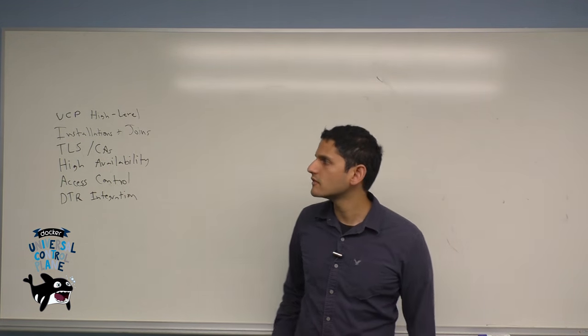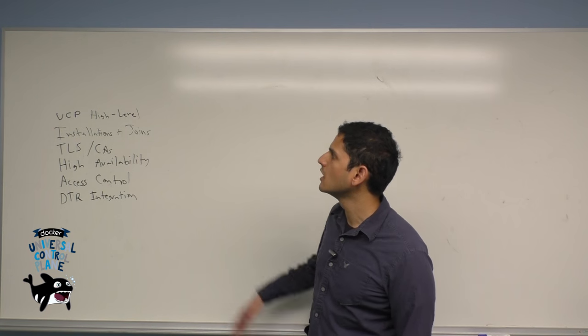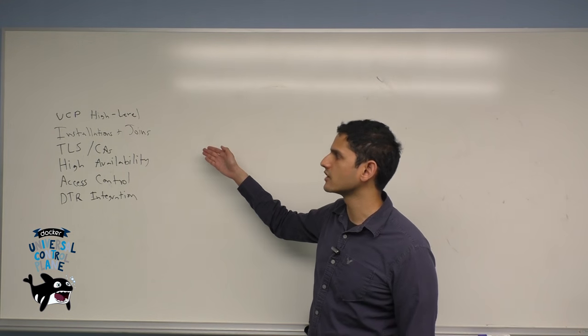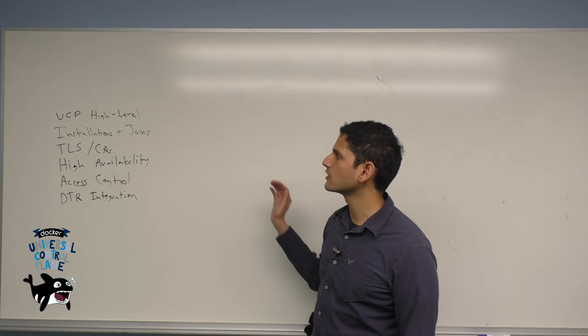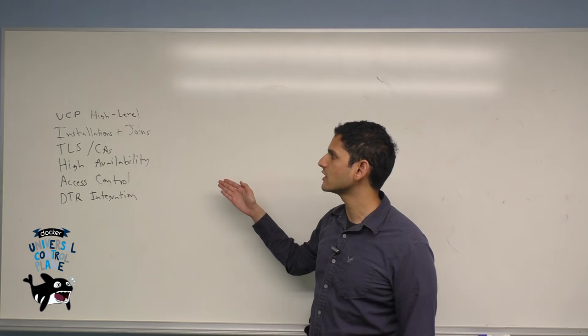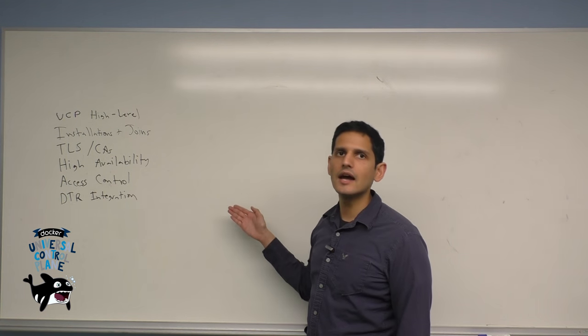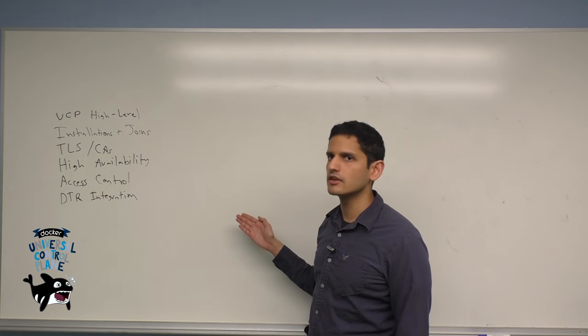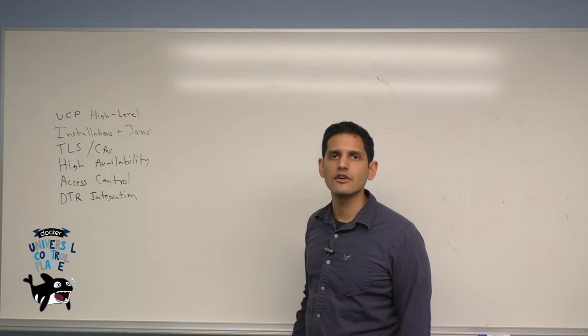In today's sets of videos, I'm going to go over several components of UCP, including a high-level overview of the architecture, how to do installation and joining of nodes, security in the form of TLS and certificate authority, high availability for your deployment, access control for users and teams, and integration with Docker Trusted Registry.